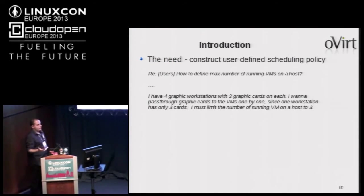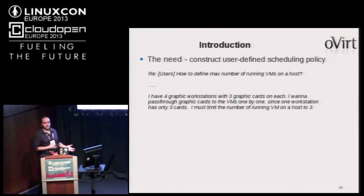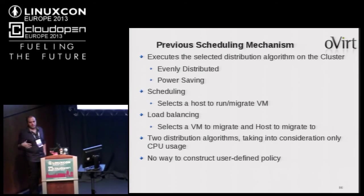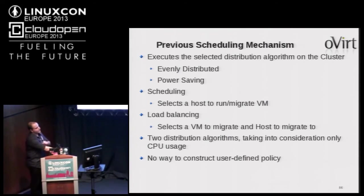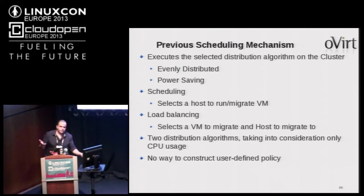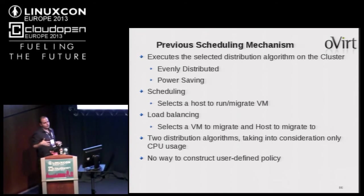Moving to the scheduling API feature. We received a request from a user wanting to define the maximum number of running VMs on a host — and we didn't have a way to do that. The scheduling mechanism we had was based on a distribution algorithm defined on the cluster: evenly distributed (to evenly distribute VMs across hosts) or power saving (to consolidate in off-peak hours, allowing some hosts to shut down).